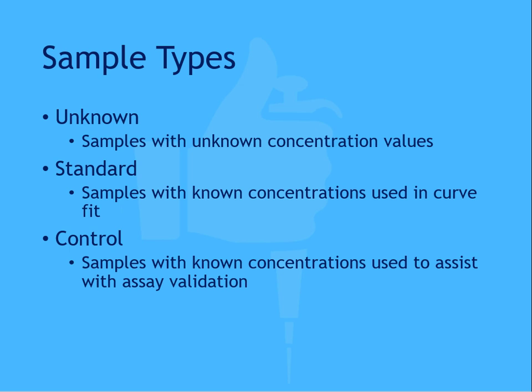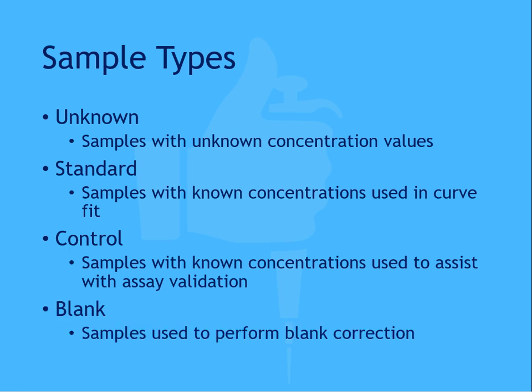You can create in-house controls by pooling previously assayed matrix samples that are near the desired range, then creating aliquots and assaying a number of times to identify the mean. Controls are important samples for assay validation and should be monitored across runs.